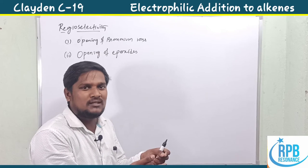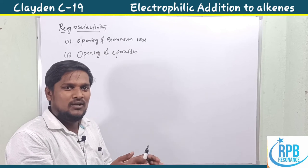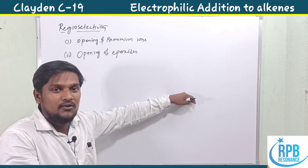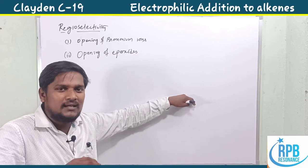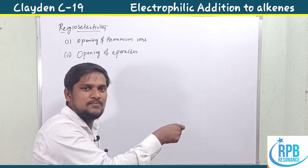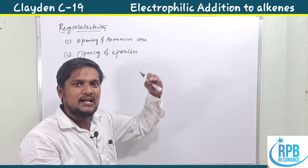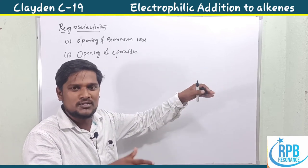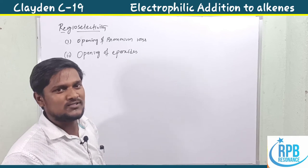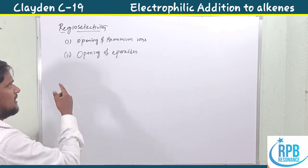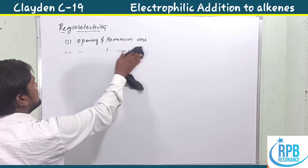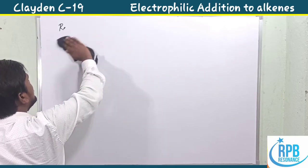Regioselectivity is when it is possible to attack more than one position — either above the plane or below the plane, or either the first carbon or second carbon. When there is more than one possibility to attack either the first position or second position, a sterically more crowded position or sterically less crowded position, that is called regioselectivity.